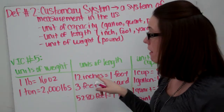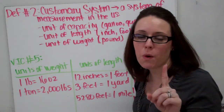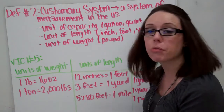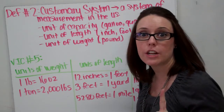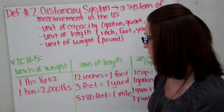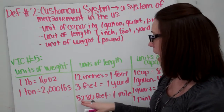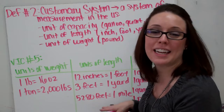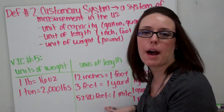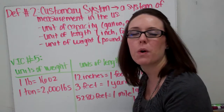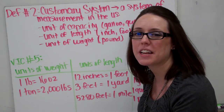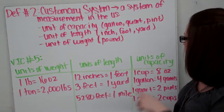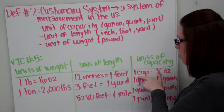Units of length: twelve inches is one foot — you guys know that. And three feet is one yard — you should know that as well. 5,280 feet is one mile, so if you run one mile, you're running 5,280 feet.